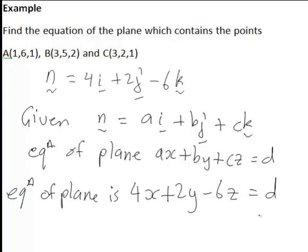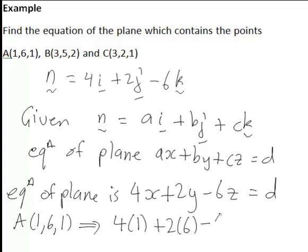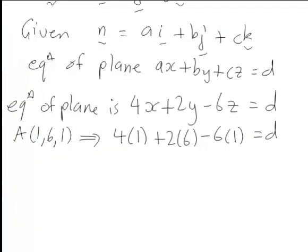We can do this by substituting any one of our three points in, as all of these points must satisfy the equation of our plane. So for instance if I decide to use the point A(1,6,1), that gives us 4 times 1 for x plus 2 times 6 minus 6 times 1 is equal to d. And that works out here to give us d equals 10.